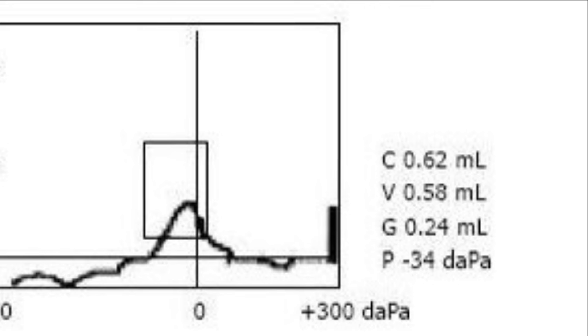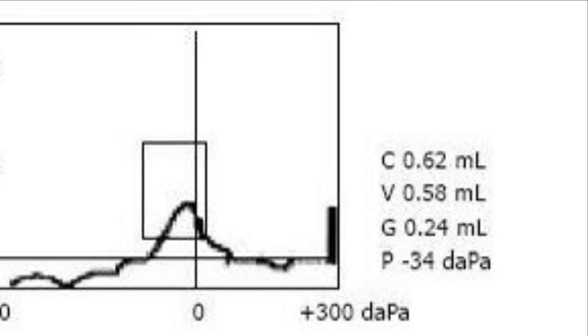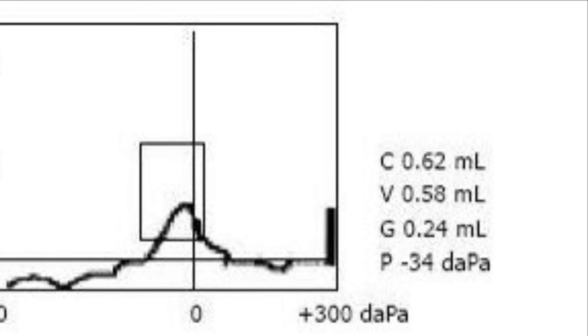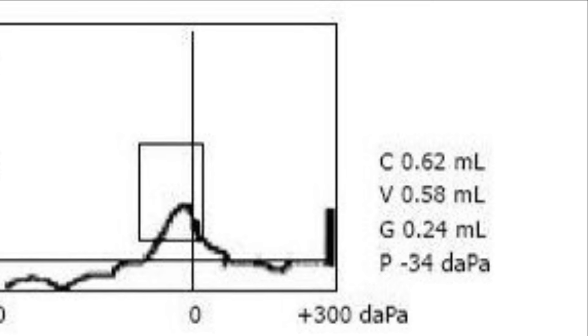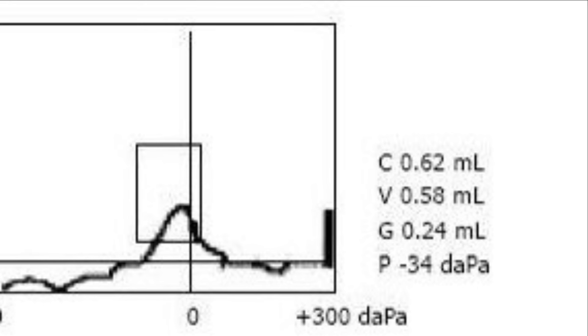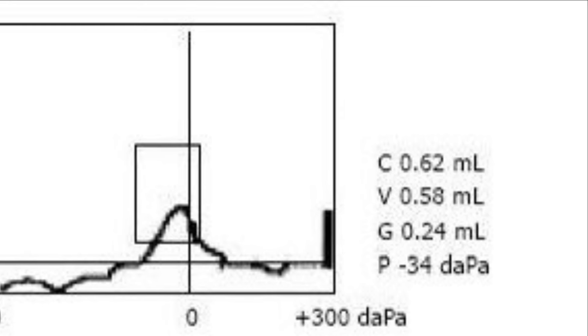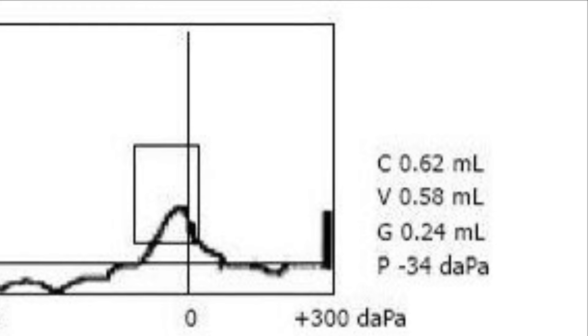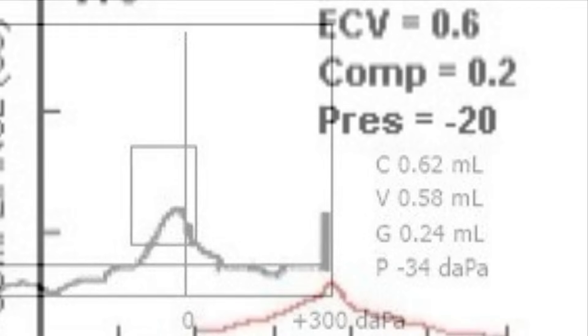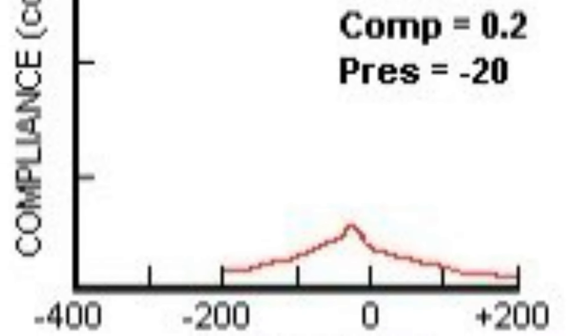Tympanometry is a crucial test in the diagnosis of OME. It measures the mobility of the tympanic membrane and the pressure in the middle ear. In patients with OME, tympanometry typically shows a flat tracing, indicating that the tympanic membrane is stiff and fluid is present in the middle ear. Negative middle ear pressure may also be noted in cases with mild eustachian tube dysfunction without full effusion. This is a non-invasive and highly sensitive tool for confirming the presence of middle ear fluid.